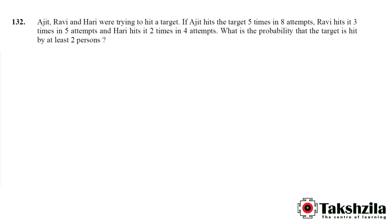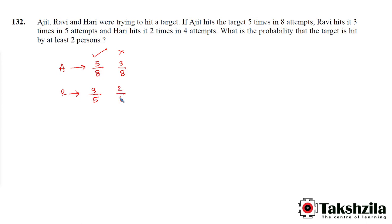Question number 132. Ajit, Ravi and Hari were trying to hit a target. Ajit hits the target 5 times in 8 attempts, Ravi hits it 3 times in 5 attempts, and Hari hits it 2 times in 4 attempts. What is the probability that the target is hit by at least 2 persons? The probability Ajit hits is 5/8, so Ajit does not hit is 3/8. Ravi hits is 3/5, Ravi does not hit is 2/5. Hari hits is 2/4 = 1/2, so Hari does not hit is also 1/2.